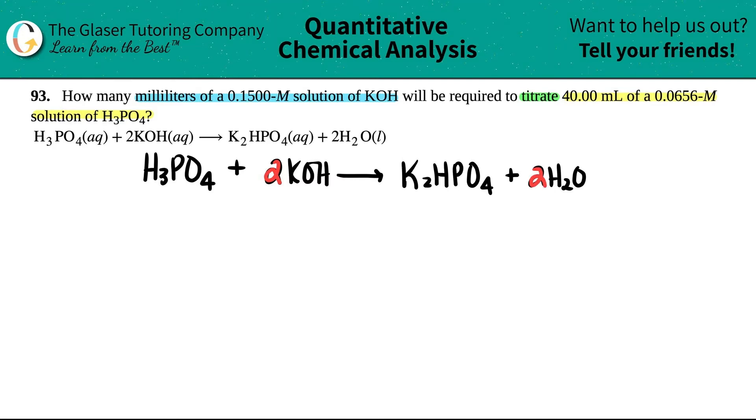Now I'm just going to write what I'm given. They told us that I'm titrating 40 mils of a 0.0656 molarity solution of H3PO4. They're asking for how many milliliters of a 0.15 molar solution of KOH. So I know the molarity, but I don't know the milliliters, aka the volume. That's what I'm searching for. They gave me more information for the acid. Can I do anything with this? Or how am I going to go from one compound to another?